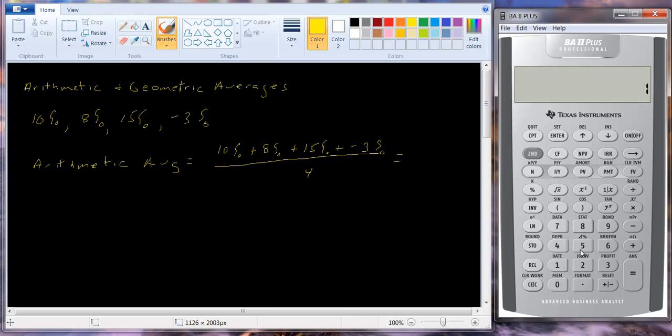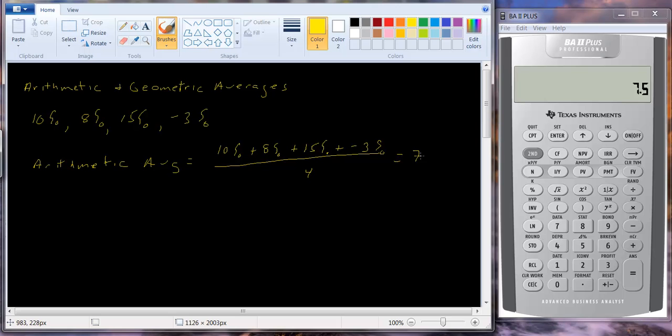And so let's just add it up, see what we get. Divide that by 4 and we get 7.5%. So that's our arithmetic average.